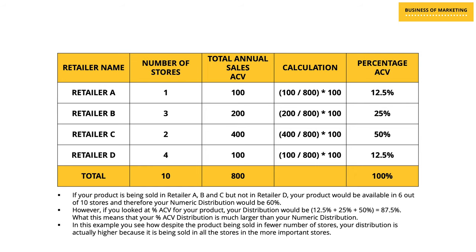Now, what does this have to do with your distribution? Looking at the same example: if your product is sold by retailers A, B, and C but not D, it's available in 6 out of 10 stores — so your numeric distribution is 60%. However, your percentage ACV distribution would be 12.5% + 25% + 50% = 87.5%. This shows that despite being in fewer stores, your distribution is actually higher because you're in all the more important stores.